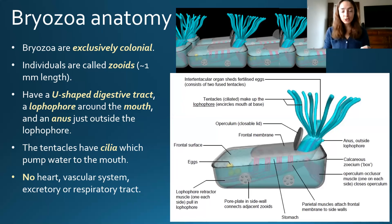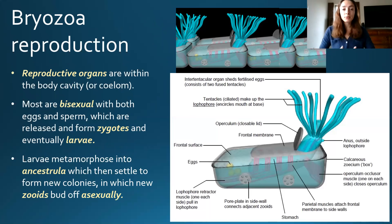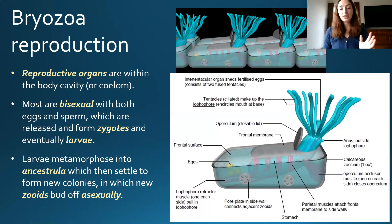Before we move on to reproduction, I wanted to show you a picture of what a zooid looks like situated in its colony and how they work together to gain food and grow. In terms of reproduction, the reproductive organs are within the body cavity of the zooid. Most bryozoan species are bisexual, with both eggs and sperm released to form zygotes and eventually larvae. These larvae can metamorphose into what's called an ancestrula, which settles to form new colonies, and then zooids bud off asexually from the ancestrula.